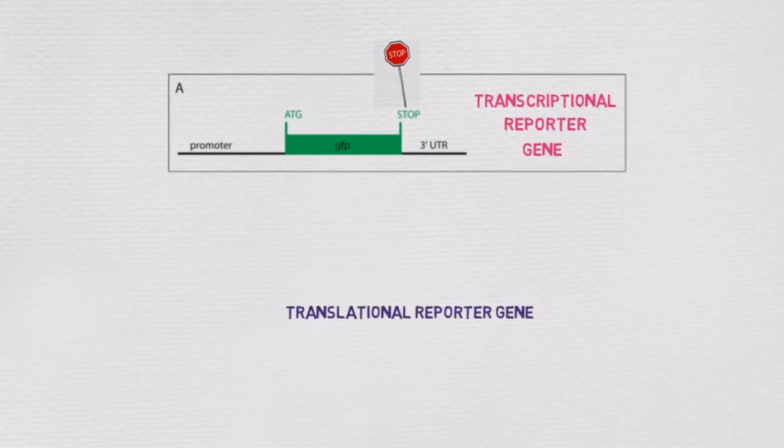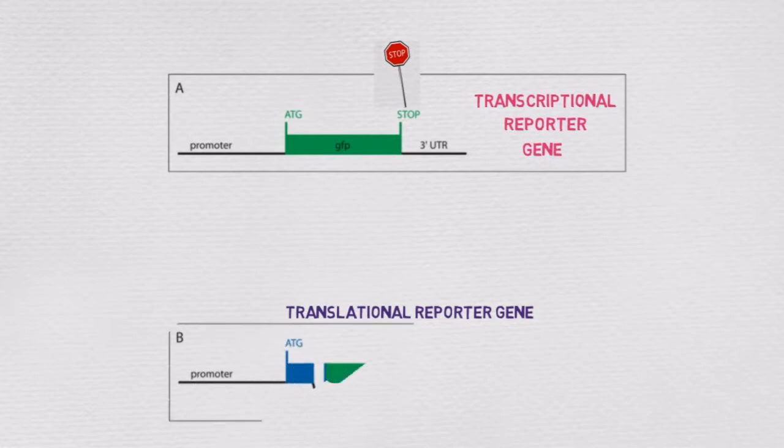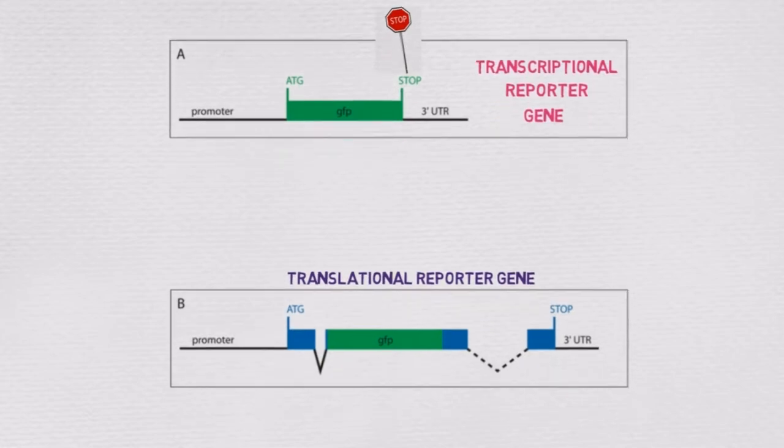Translational reporter genes are fused to the gene of interest and produce a reporter-tagged protein. This type of reporter monitors protein stability and reveals where a protein is made and where it localizes in the cell.